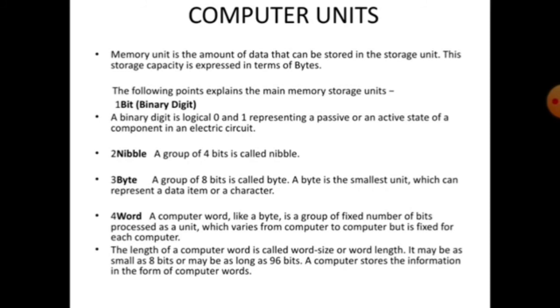Two - nibble. A group of four bits is called a nibble. Three - byte. A group of eight bits is called a byte. A byte is the smallest unit which can represent data in terms of a character or item. Four - word. A computer word, like a byte, is a group of fixed number of bytes processed as the unit, which varies from computer to computer but is fixed for each computer. The length of the computer word is called word size or word length. It may be as small as 8 bits or may be as long as 96 bits. A computer stores the information in the form of computer words.